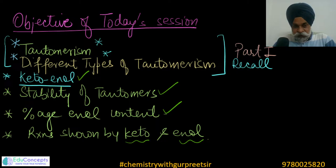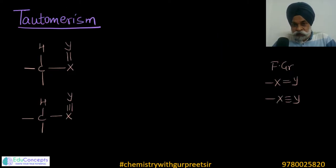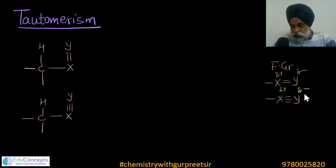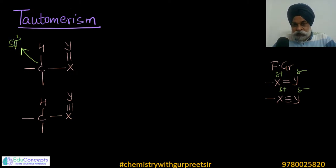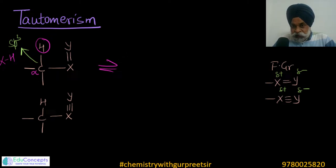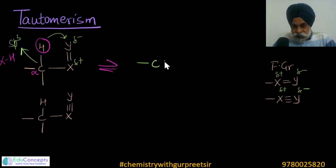As covered in part one, if you have a functional group with a multiple bond along with polarity — where Y is more electronegative than X — and this functional group is attached to an sp3 carbon containing one hydrogen atom, referred to as alpha hydrogen, that hydrogen has the tendency to move toward the electronegative end, because this side is delta-negative and this side is delta-positive.